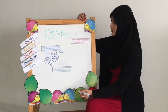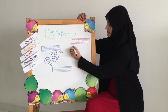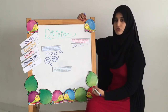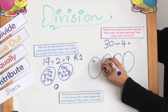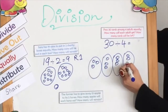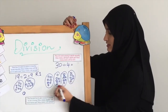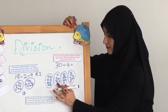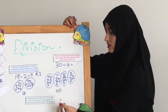Let's solve the second question. Pass 30 cards among 4 adults equally. How many will each adult get? How many cards will be left? So we need to find out how many cards each adult is going to get and how many are going to remain. And now we need to distribute 30 equally. 25, 26, 27, 28, 29, 30. I don't have 31 and 32 to give to these 2 people, so I cannot give the first 2 people the cards as well. So there are 2 cards that are remaining.